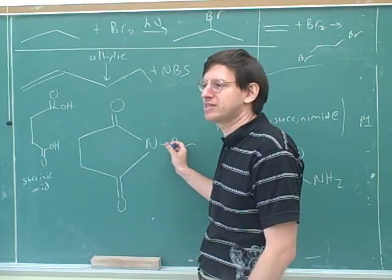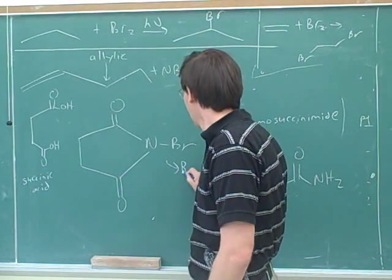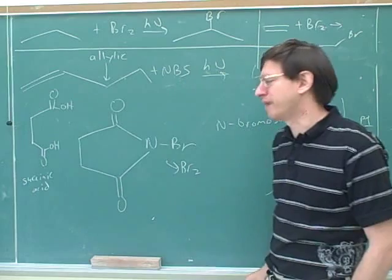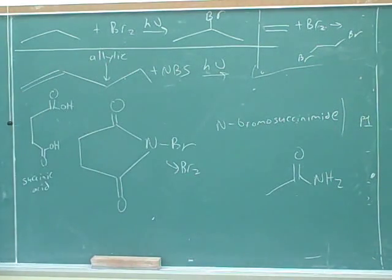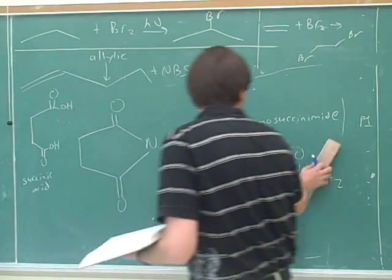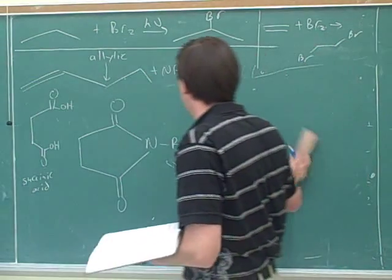Again, I don't think we'll go through the whole mechanism, but we know that this is basically going to give us a source of Br2. We won't go through the mechanism, but this is going to give us a source of Br2. N-bromosuccinimide. Or NBS.